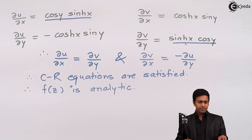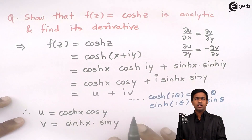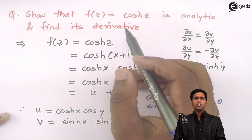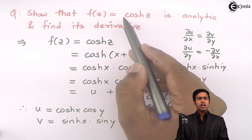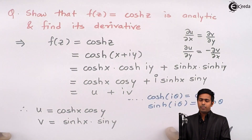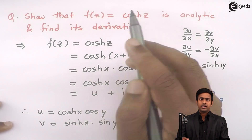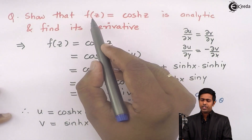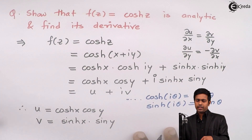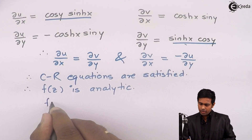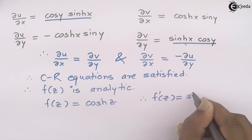Now we have to find the derivative of f(z). There are two ways to find the derivative. If you directly differentiate f(z) = cosh(z) with respect to z, you get f'(z) = sinh(z). However, there are cases when f(z) is not given in terms of z but rather in terms of x and y, so we need an alternative approach.